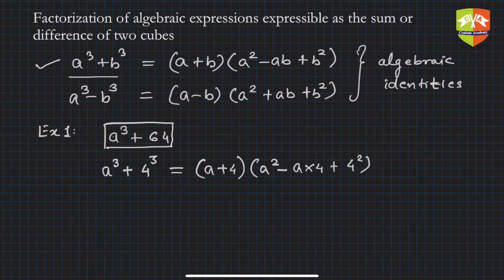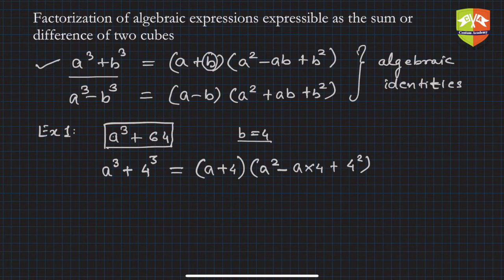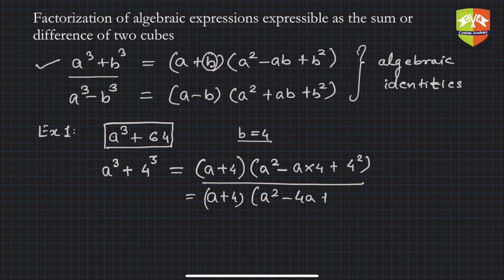So applying the identity with b = 4, it becomes (a + 4)(a² - 4a + 16). Comparing with the identity, b is 4, and adopting the formula gives us this expression. Hence the factorization is (a + 4)(a² - 4a + 16).